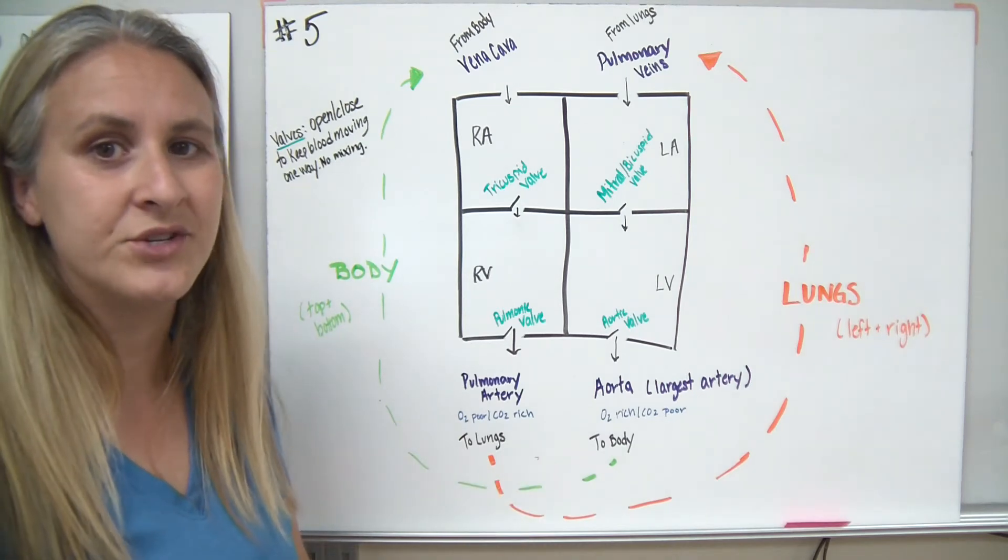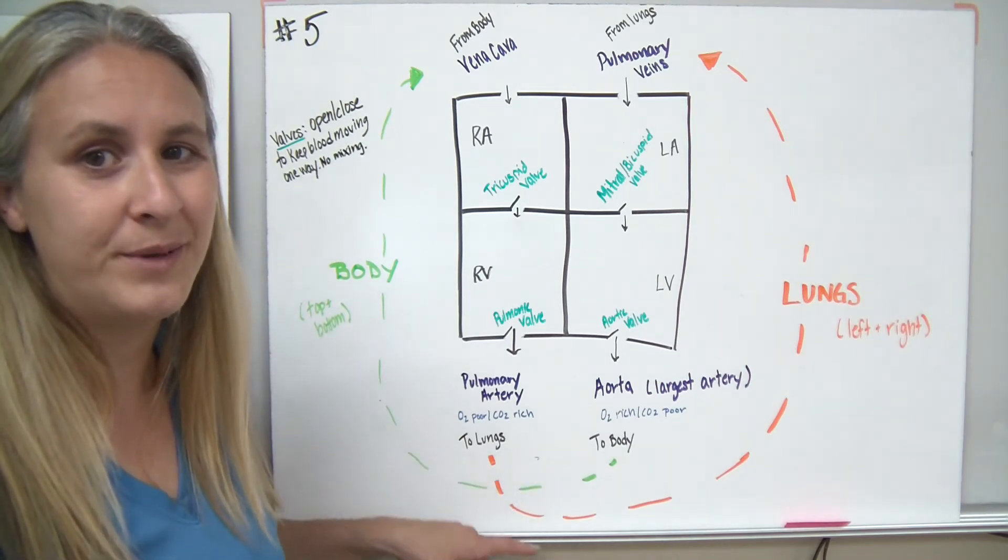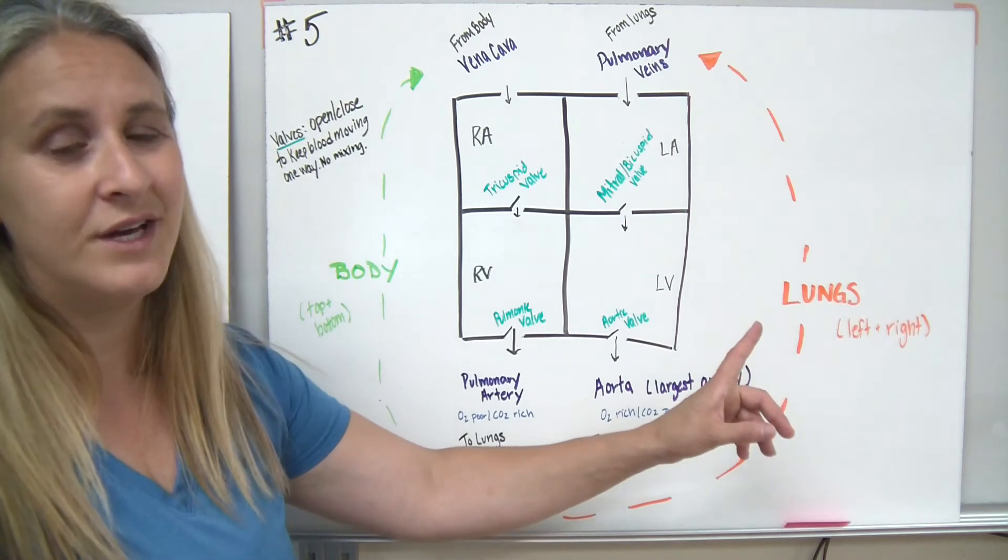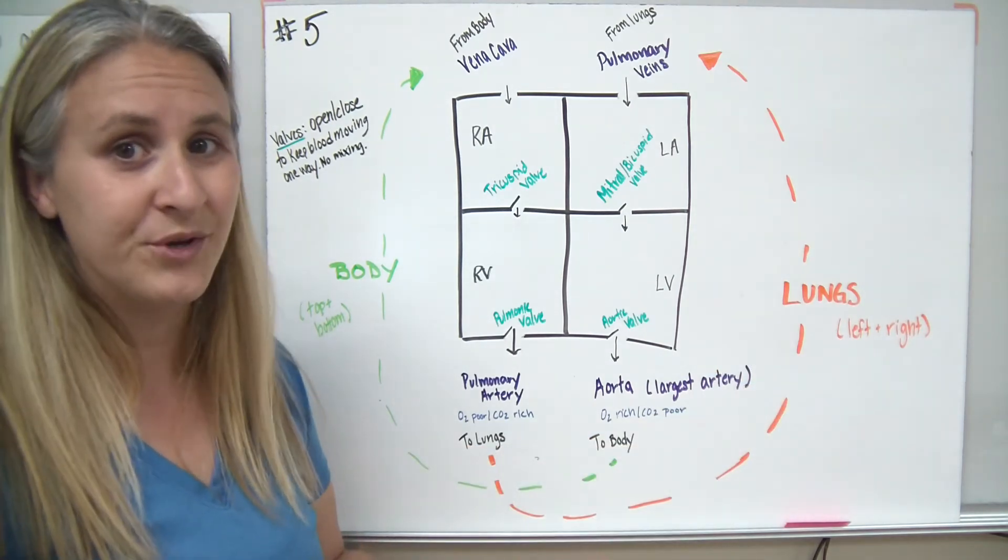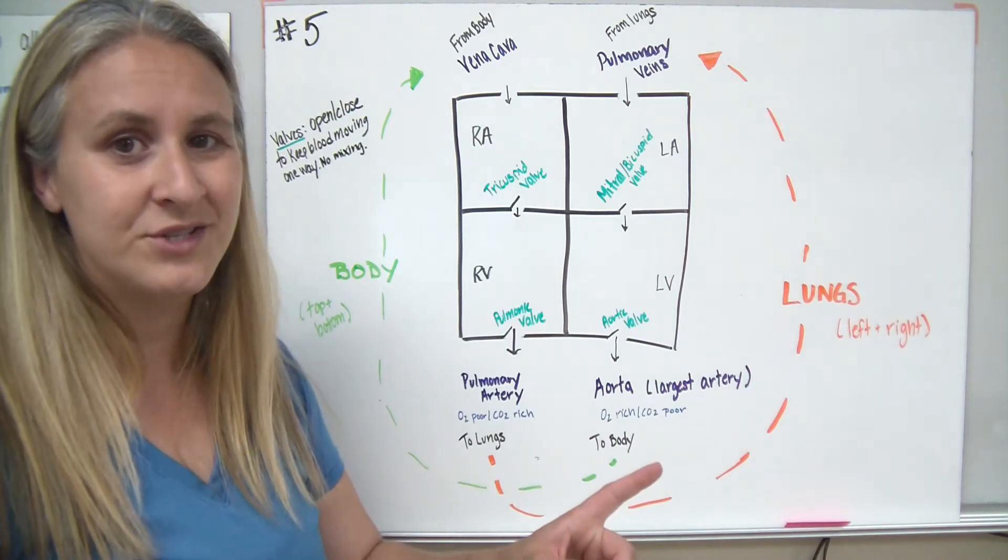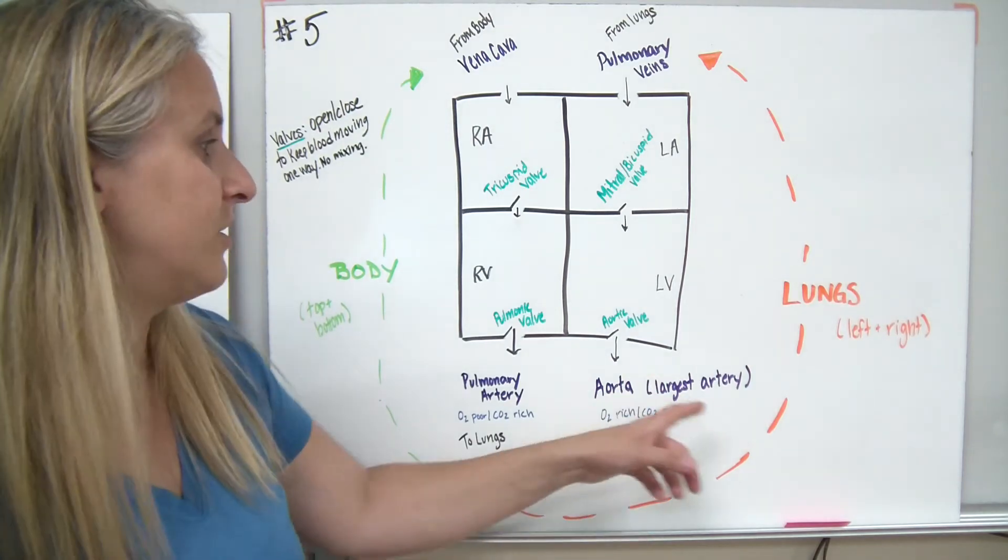Remember, this is poor in oxygen. So we're going to go to the lungs in order to pick up oxygen. So we head out to the lungs. Remember, there's a right and a left lung in your body. Remember, you have two. So the pulmonary artery actually splits in order to go to each lung.